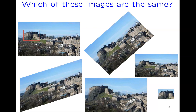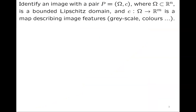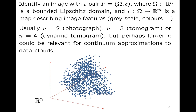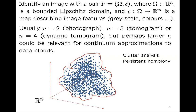For me, an image is going to be a pair P consisting of an open subset Ω of ℝⁿ — some bounded Lipschitz domain — and an intensity map, a map from Ω to ℝᵐ, which might be a grayscale (m=1) or different colors or other features. Here n=2 would be a photograph, n=3 maybe a tomogram, n=4 a dynamic tomogram, and larger n might be relevant for continuum approximations to data clouds.